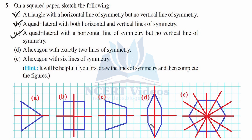Part C: a quadrilateral with horizontal line of symmetry but no vertical — making one side longer and the other shorter gives horizontal symmetry only. Part D: a hexagon with exactly two lines of symmetry — don't make it regular; keep one side longer. Part E: a hexagon with six lines of symmetry — make a regular hexagon with all sides equal.